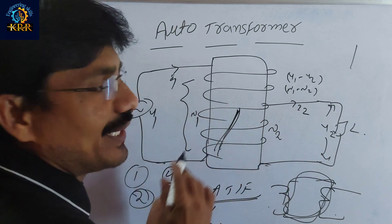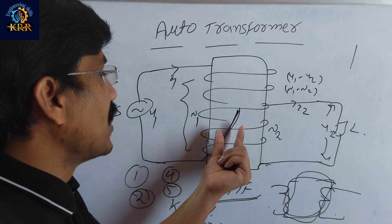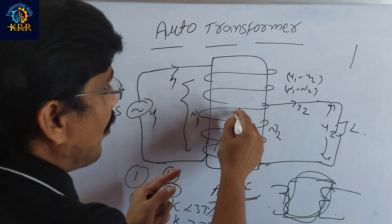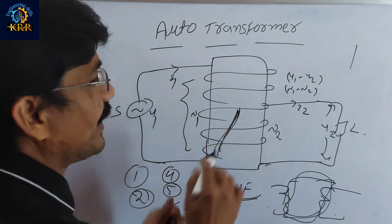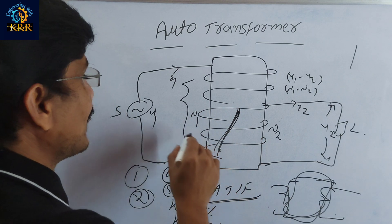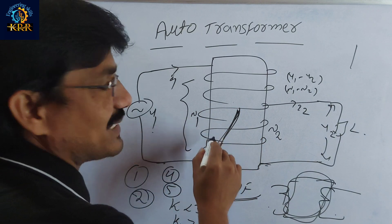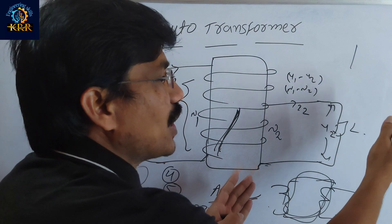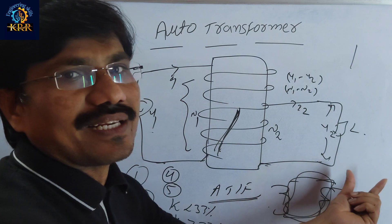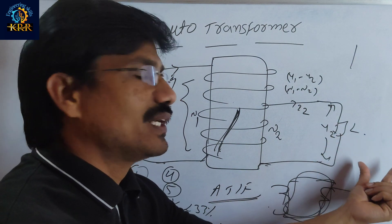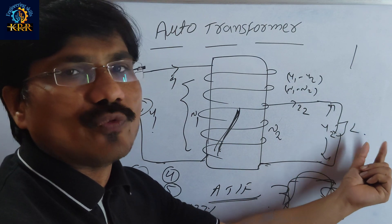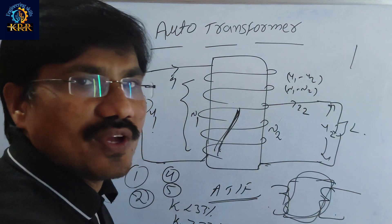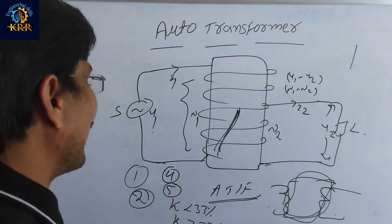The fifth drawback is that if any opening occurs on the common winding, the high voltage directly passes through to the load terminal. As a result, the load will get damaged.